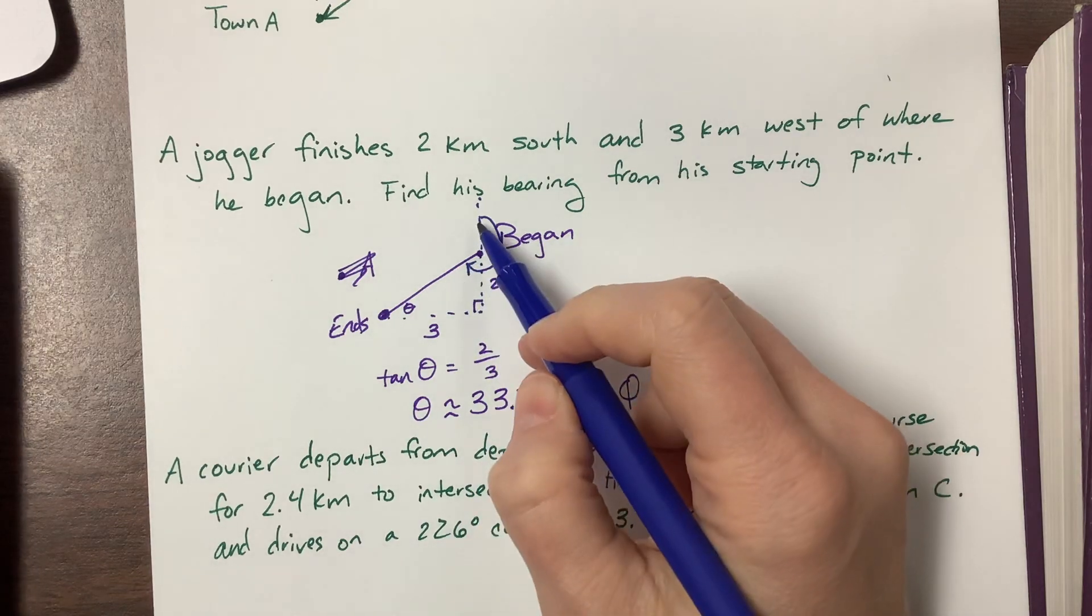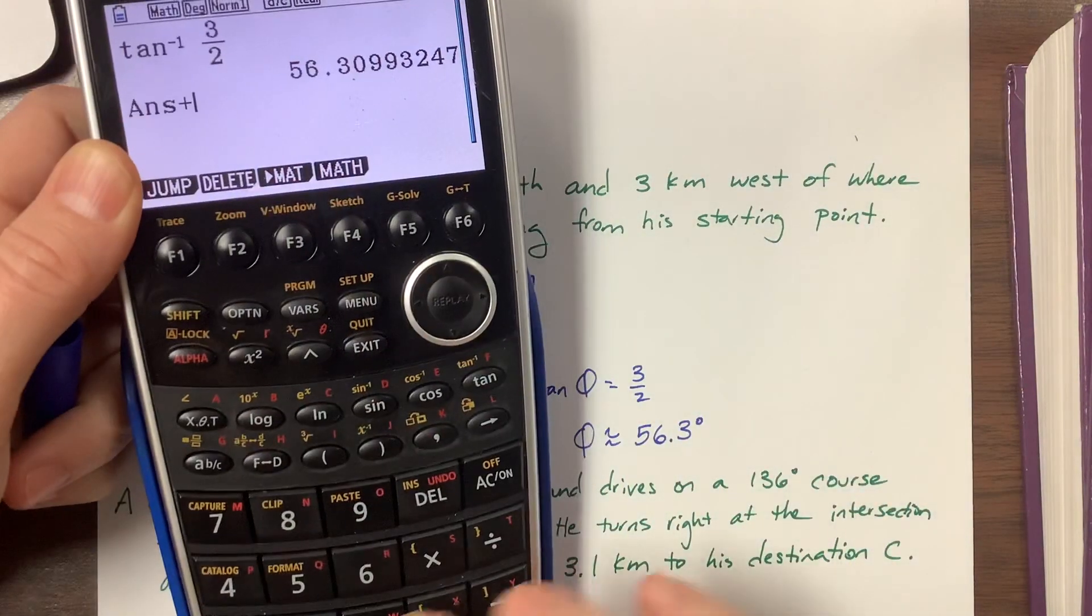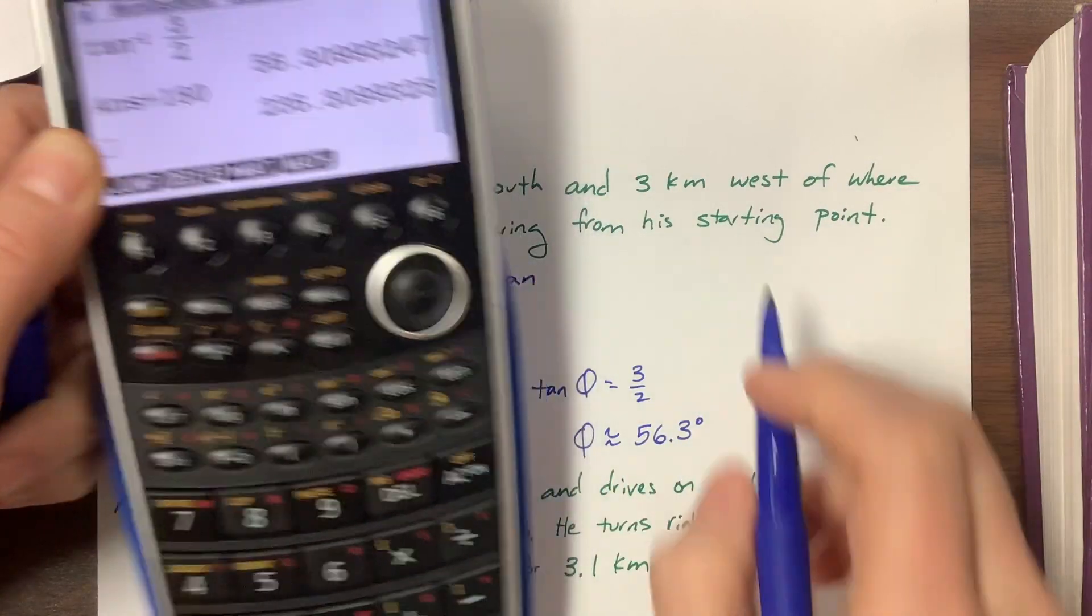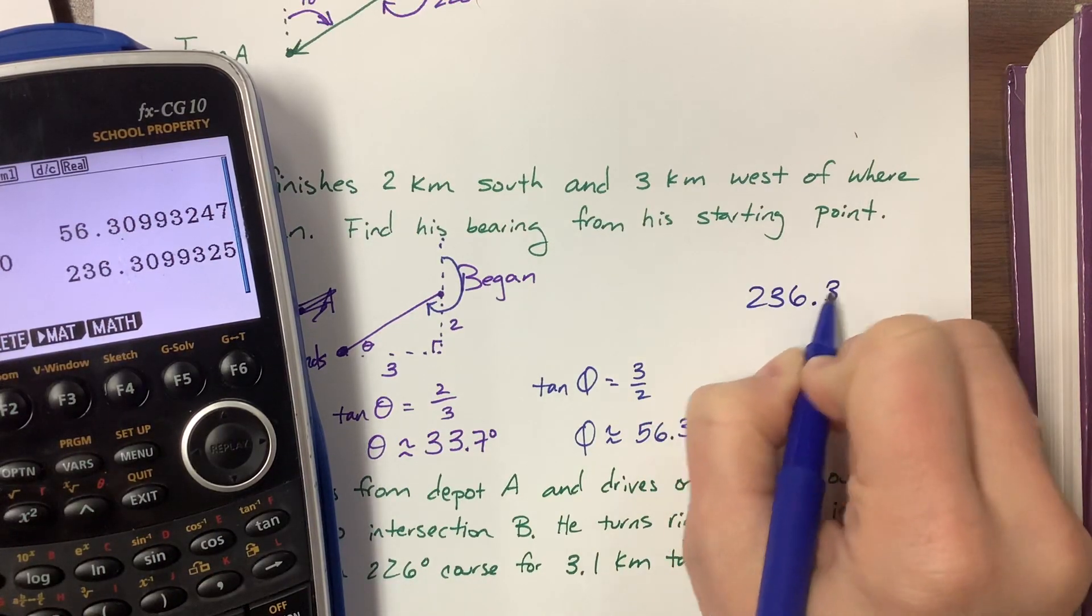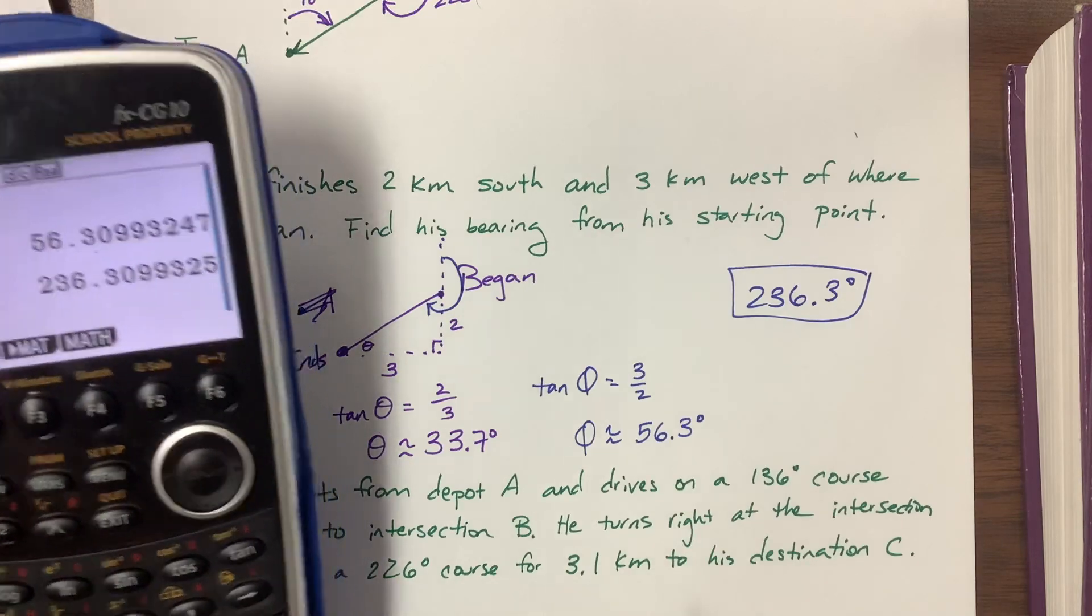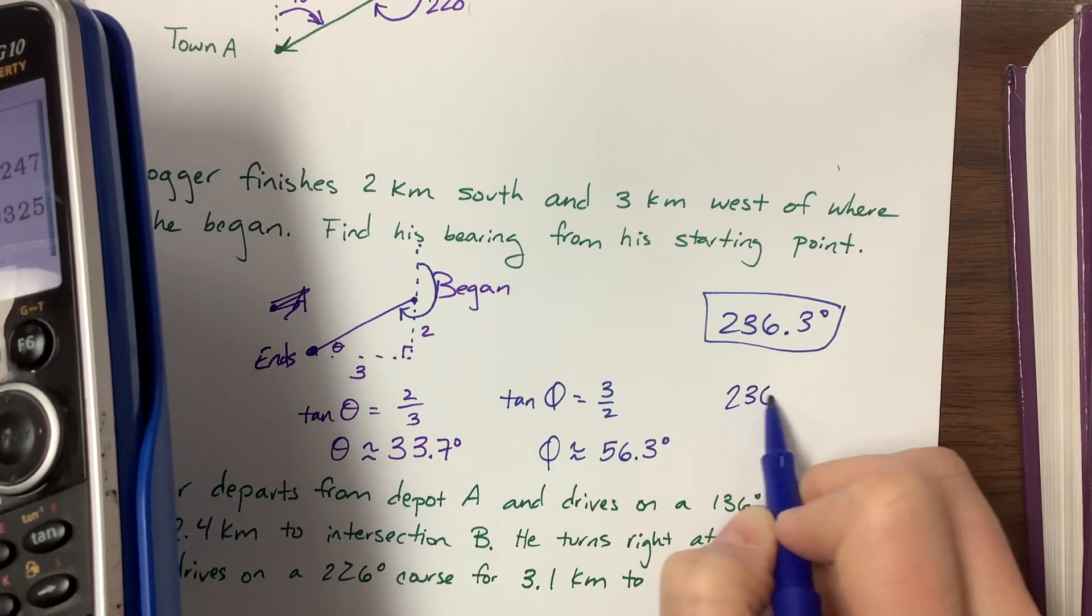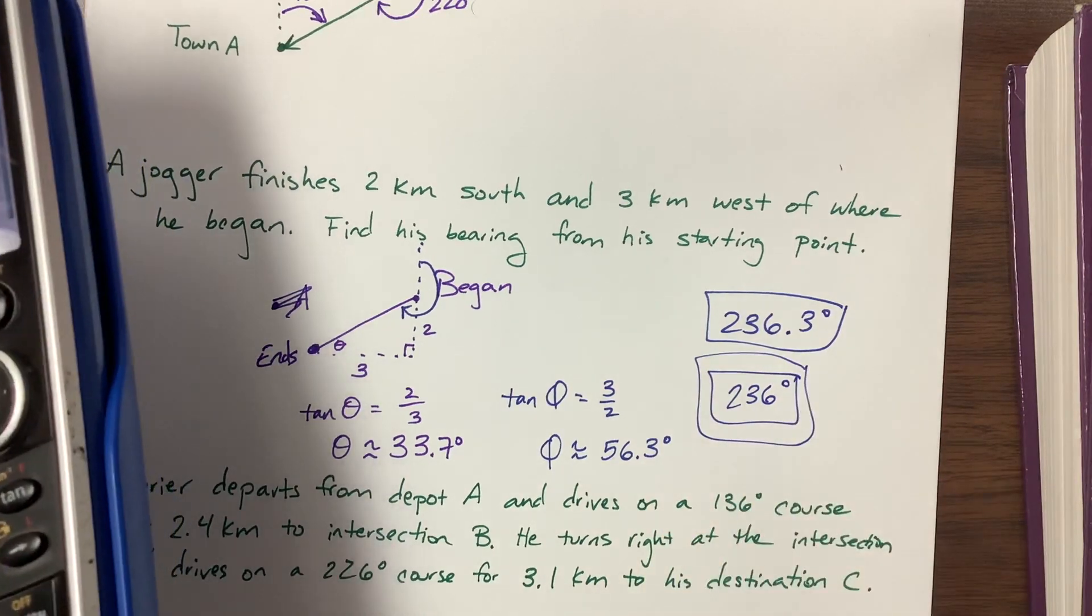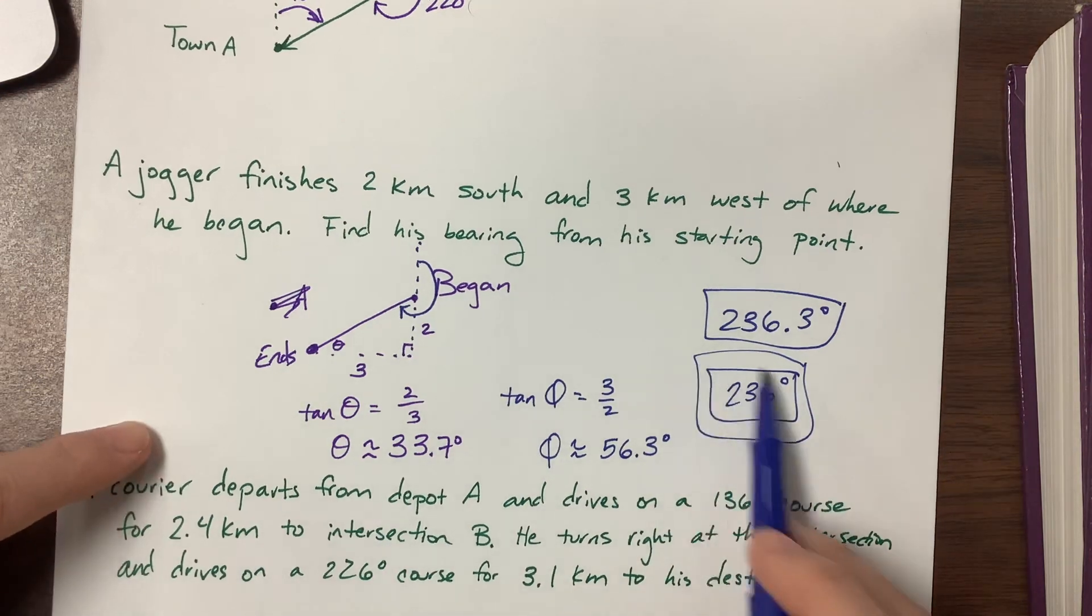And then there's 180 that we add to that. So his bearing is going to be that plus 180, which is going to be the final answer: 236.3 degrees. IB typically likes three sig figs, so really and truly your best answer is 236 degrees.